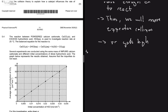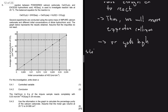Moving ahead to 5.4: we have a reaction between powdered calcium carbonate and excess hydrochloric acid, used to investigate reaction rate at 25°C. We have a balanced equation, and several experiments are conducted using the same mass of impure calcium carbonate with different initial concentrations of dilute hydrochloric acid. The graph represents the results. If impurities are present, assume they do not react. Question 5.4.1 asks for the controlled variable — the variable that is kept constant.